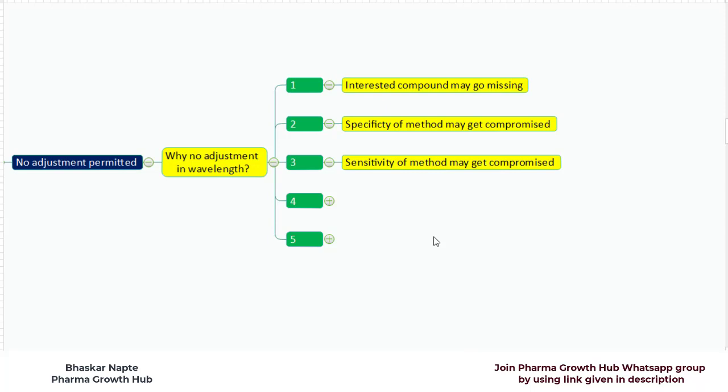In addition to that, the limit of quantitation for your analytical method can also get changed. If the response is getting changed, the sensitivity of analytical method is getting changed, this will have a direct impact on the quantitation level. This may be a problem if the quantitation level goes above your reporting threshold. The change in detection wavelength is not permitted as it can negatively impact the method's sensitivity.